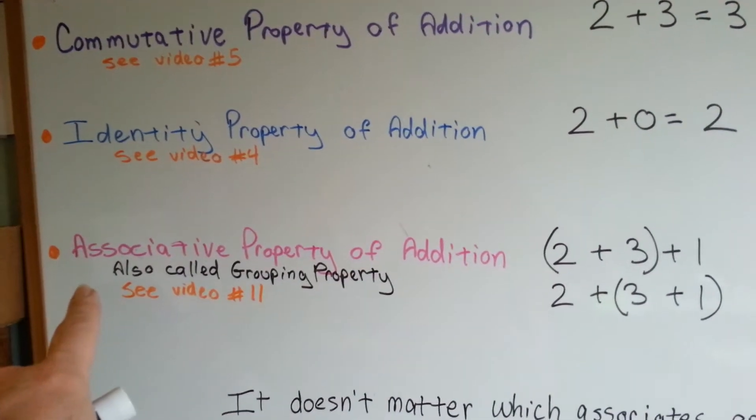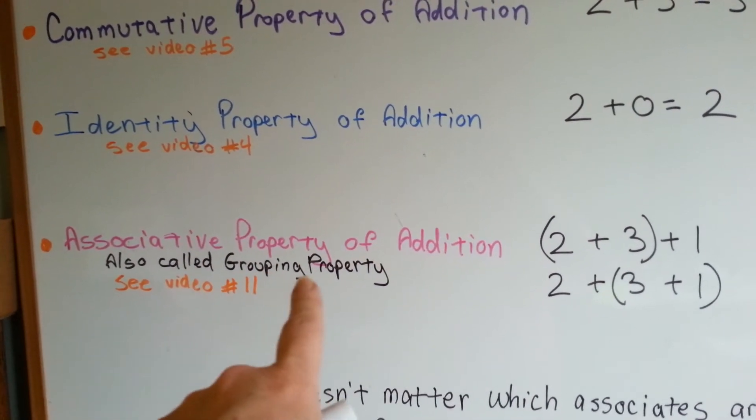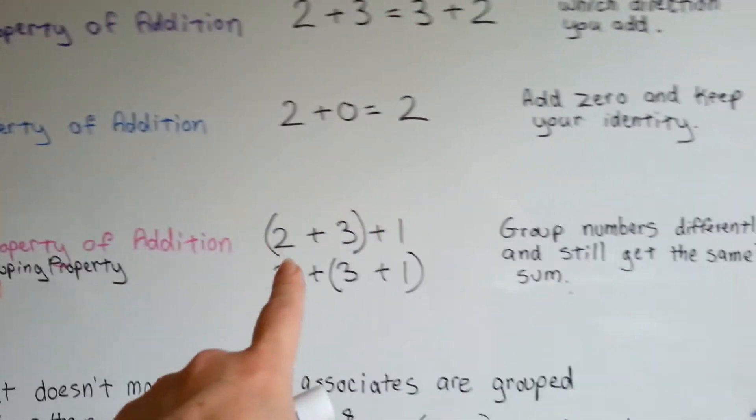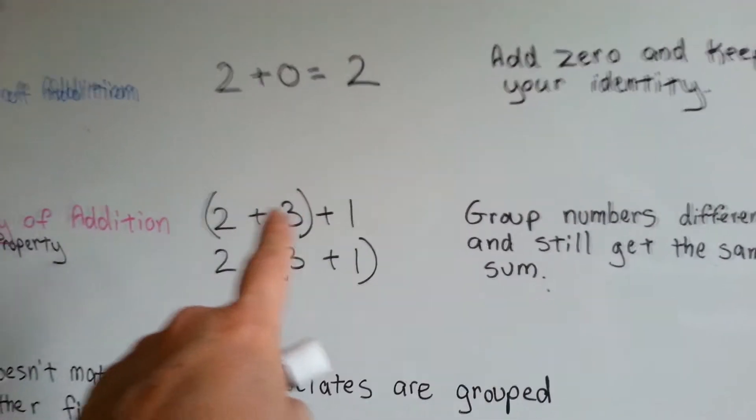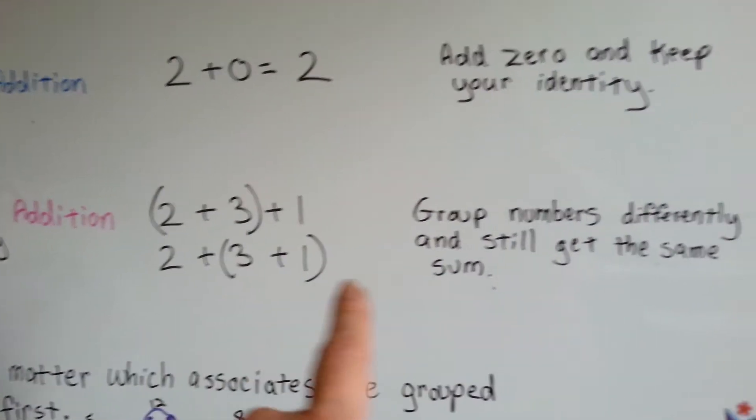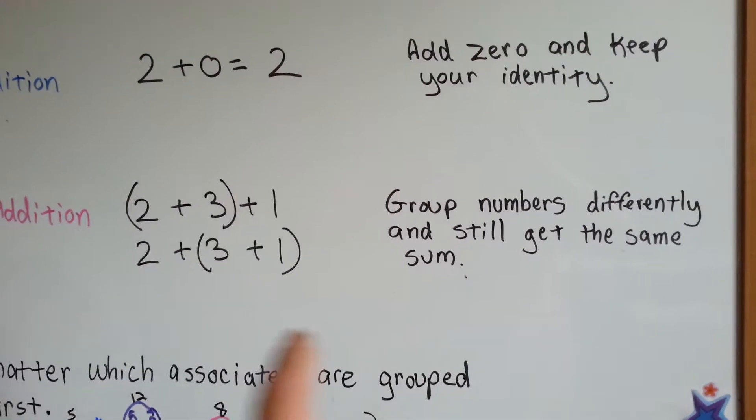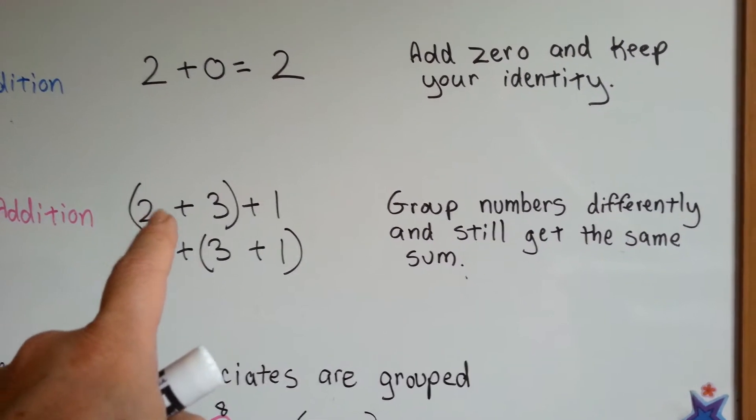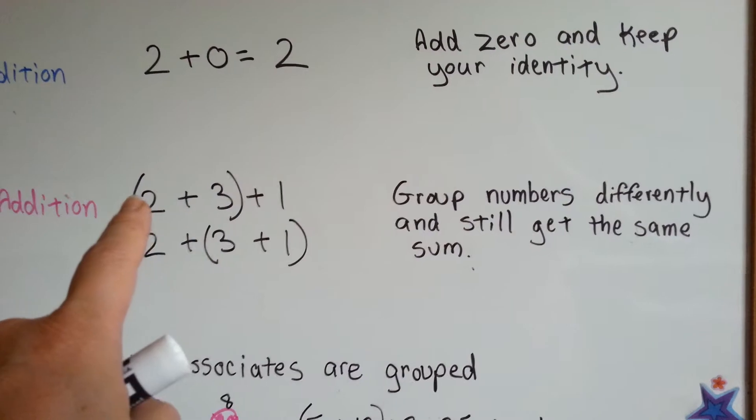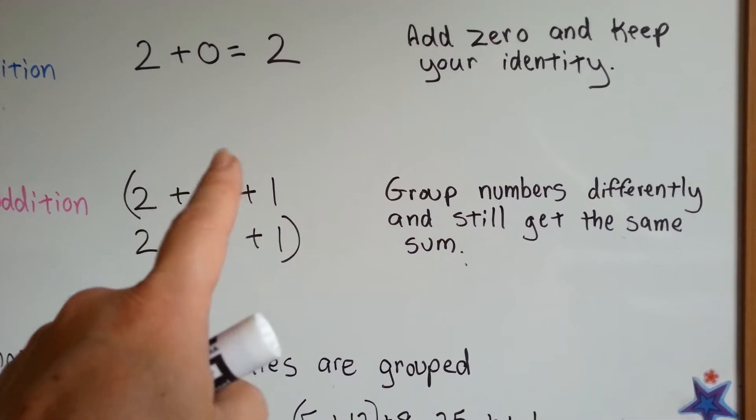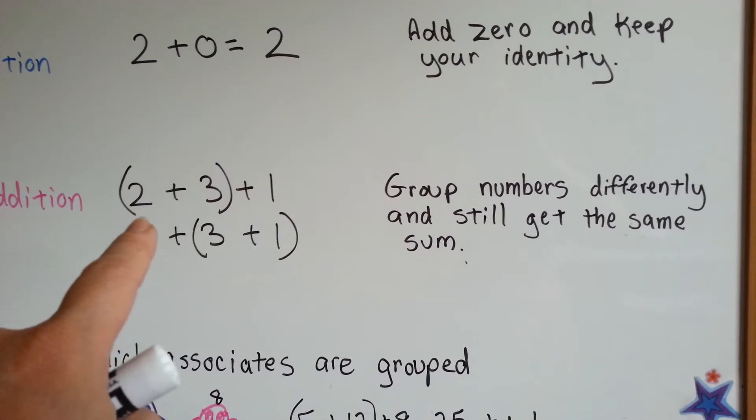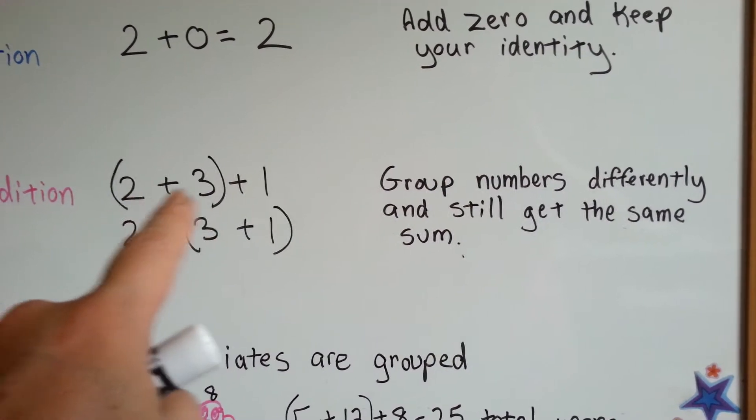For the associative property of addition, which is also called the grouping property, you can group numbers in different ways and still get the same sum. If you have 2 plus 3 plus 1 and you group in parentheses, that's what these are, they're called parentheses, if you group them and add them first,